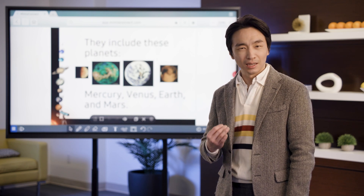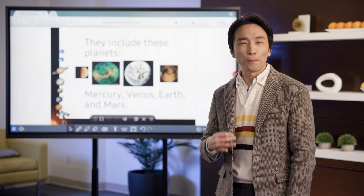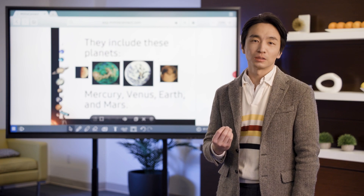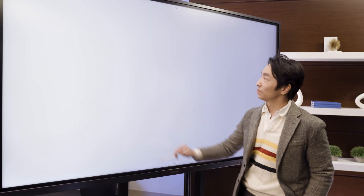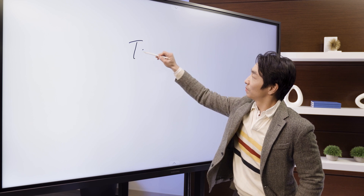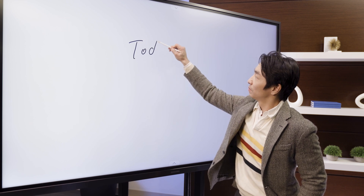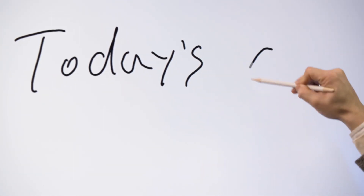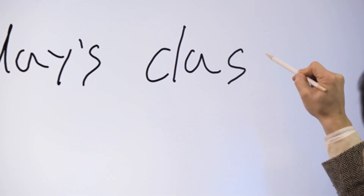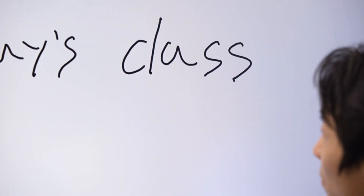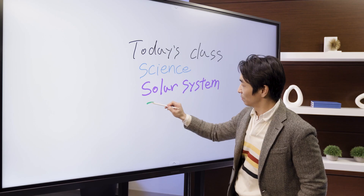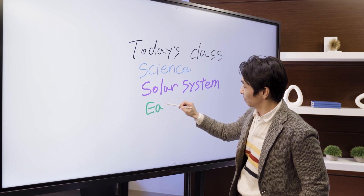Not only is it big in size, but it's packed with easy-to-use, innovative features. Some of the unique features of the interactive display include a smooth pen-to-paper-like writing experience, delivered using the Samsung interactive display pen-like writing instrument that uses a variety of colors, styles, and widths.